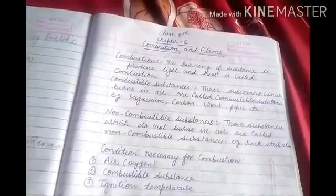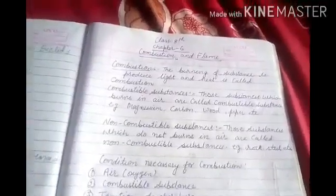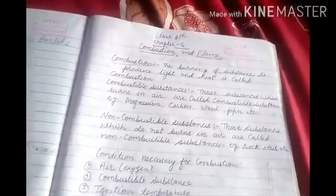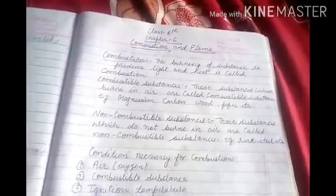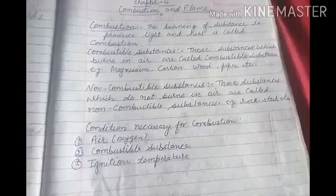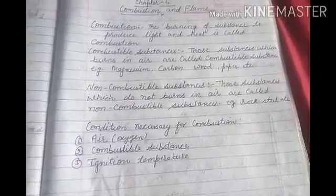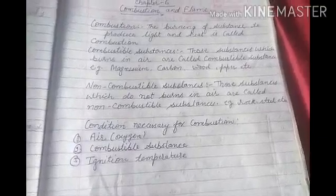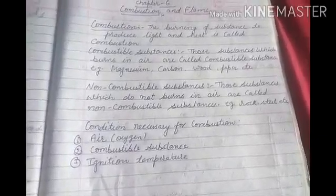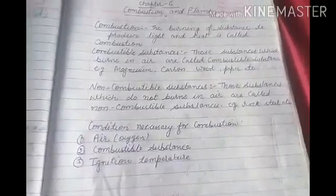Ab dekhein, koi substance jalega ya nahi jalega — toh do tarah ke substance hote hain: ek combustible substance aur ek non-combustible. Those substances which burn in air are called combustible substances. Aise materials, aise padaart jo air mein jalte hain, unhe hum combustible substance kehte hain.